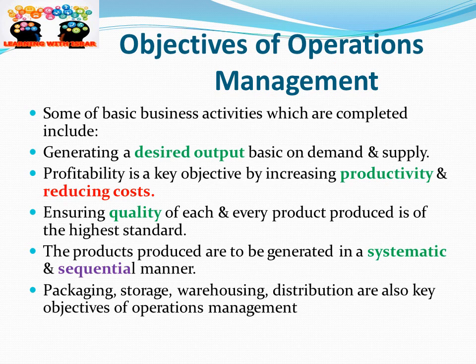After discussing the scope of Operations Management, let's look at its objectives. Some basic business activities that are completed include generating a desired output based on Demand and Supply. Profitability is another key objective, achieved by increasing Productivity and reducing Cost. Ensuring the quality of every product produced is of the highest standard, and products are to be generated in a systematic and sequential manner.